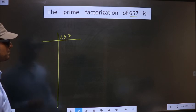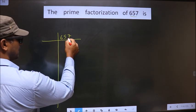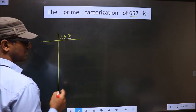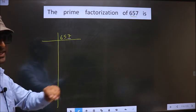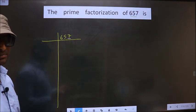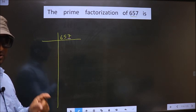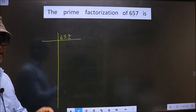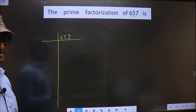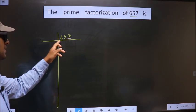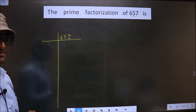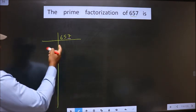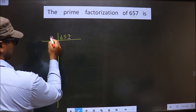Next, in this number the last digit is 7, which is not even. So this is not divisible by 2. Next prime number is 3. To check divisibility by 3, we should add the digits. That is 6 plus 5 plus 7 is 18. Is 18 divisible by 3? Yes. So this number is also divisible by 3.